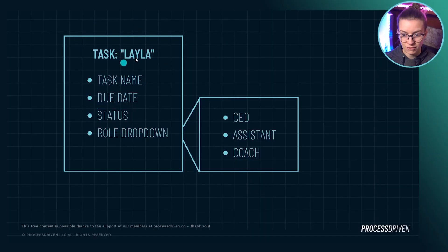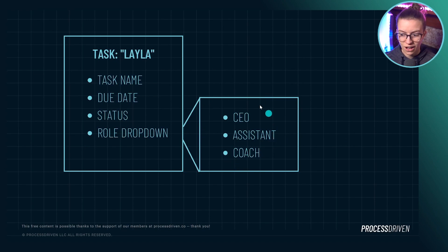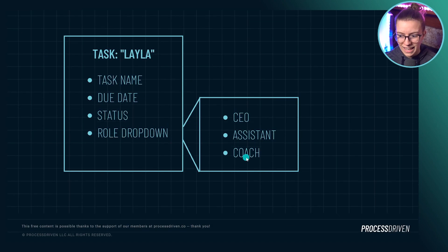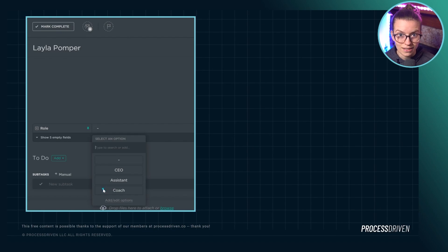Here we have a task where the name of the task is Layla, and we have a few pieces of data associated with that task. And then we have a dropdown custom field — just a regular old dropdown with three options in it. These three options are the three different roles in this imaginary business, and we're going to connect the task to the roles by using a dropdown. This is kind of what it would look like written out, and in ClickUp, if you were to flip this over, it would look something like this: you have a task named Layla, a few fields associated with it, and then that dropdown custom field.